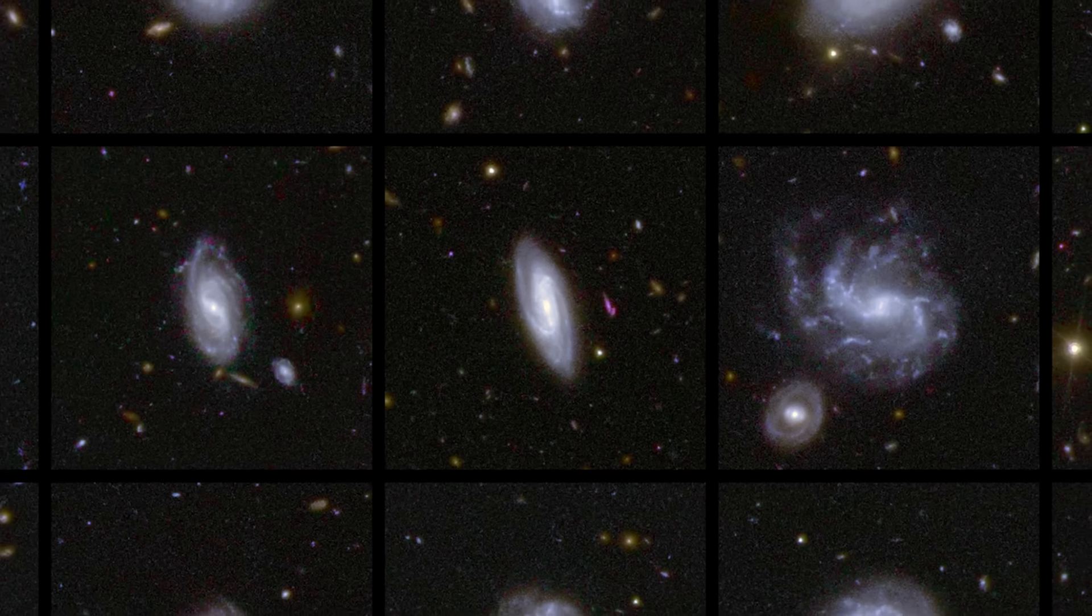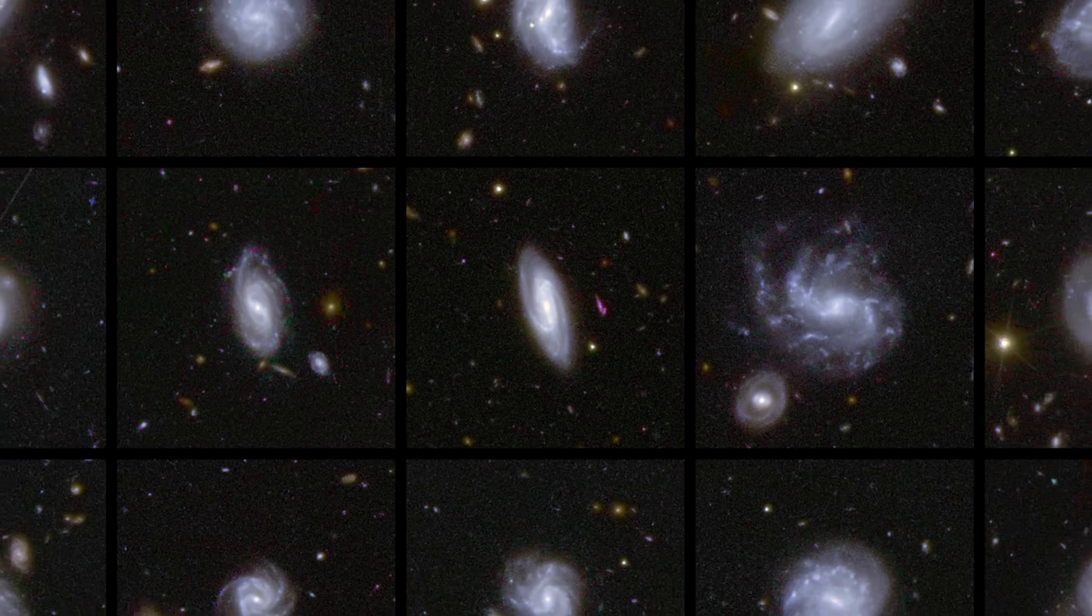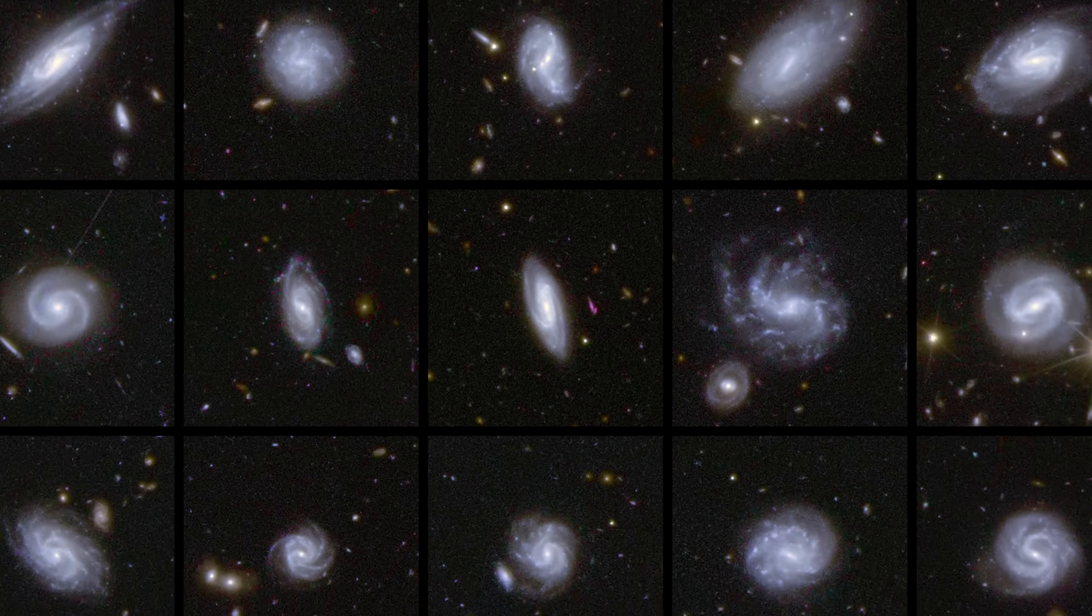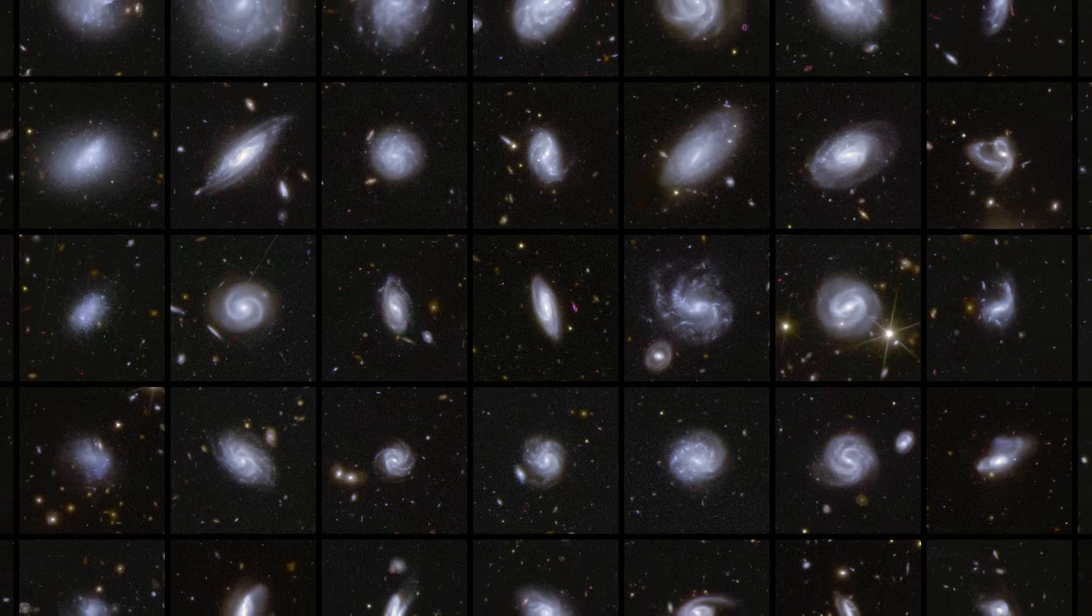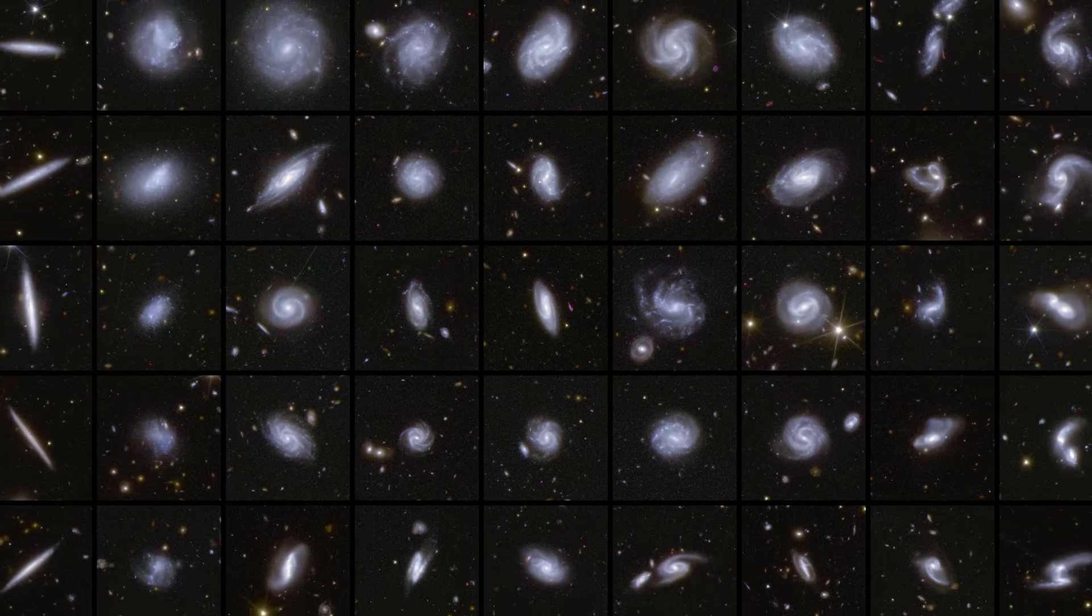Already, it has provided morphological classifications for about 380,000 galaxies, using a blend of AI algorithms and help from the public through the Galaxy Zoo Citizen Science Project.